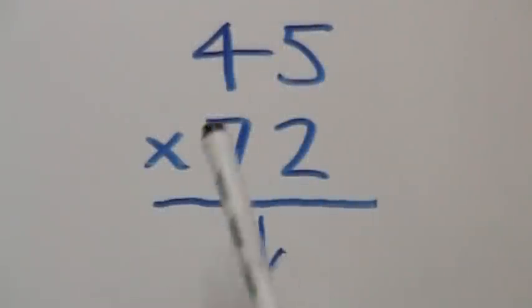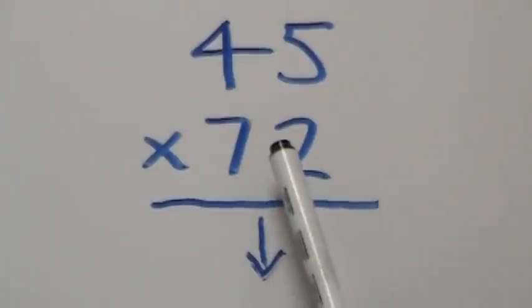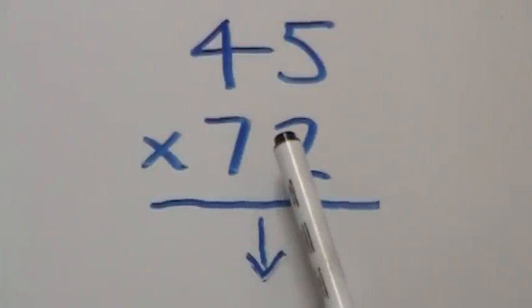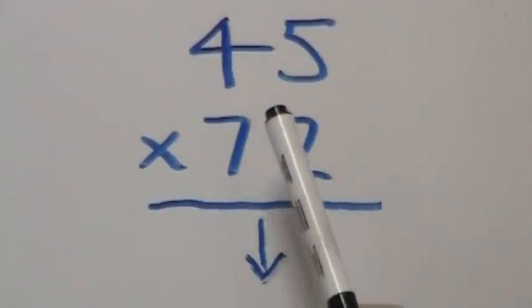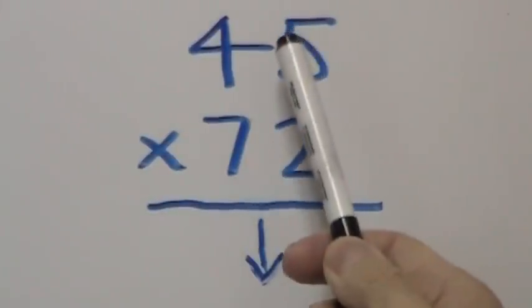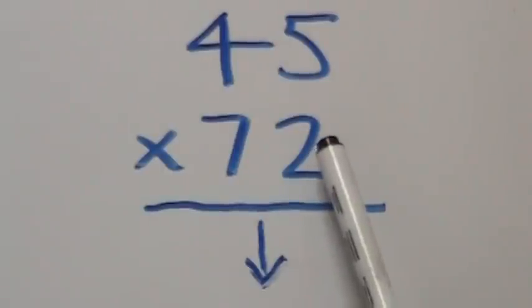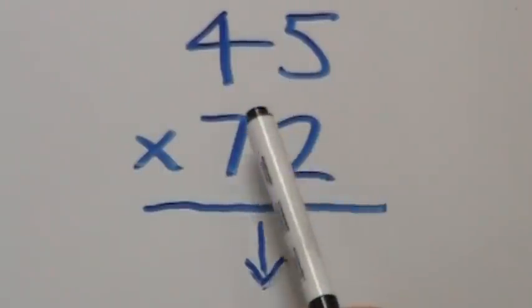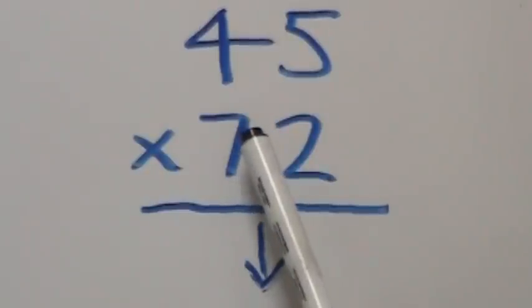We start with our problem 45 times 72. We're going to multiply 45 both by 2, which is in the ones column, and by 70, which is in the tens column.